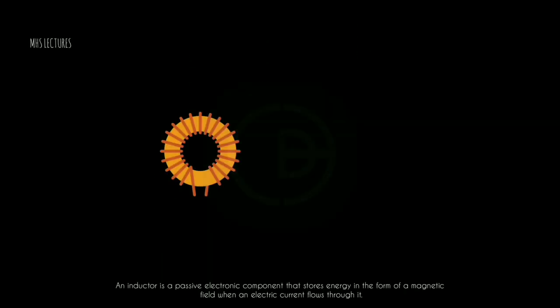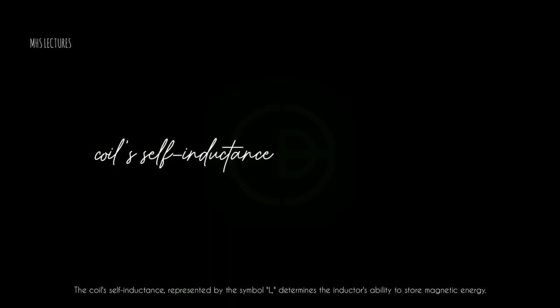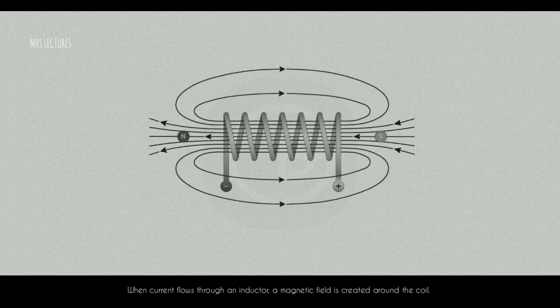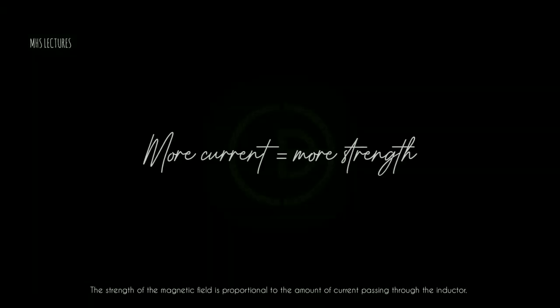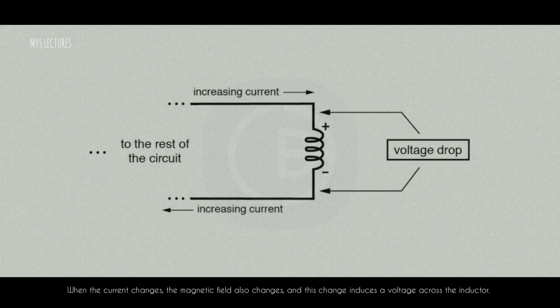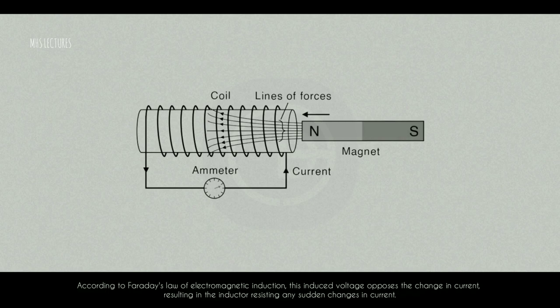An inductor is a passive electronic component that stores energy in the form of a magnetic field when an electric current flows through it. It is typically constructed by winding a conducting wire into a coil or using a core material to increase the inductance. The coil's self-inductance, represented by the symbol L, determines the inductor's ability to store magnetic energy. When current flows through an inductor, a magnetic field is created around the coil, and its strength is proportional to the amount of current passing through. When the current changes, the magnetic field also changes, inducing a voltage across the inductor that opposes the change in current, resulting in the inductor resisting any sudden changes in current.